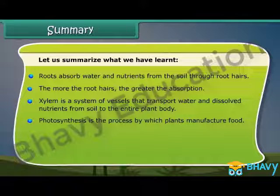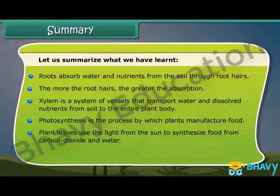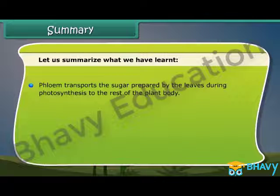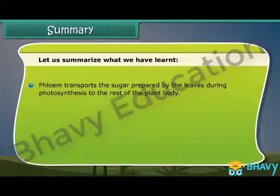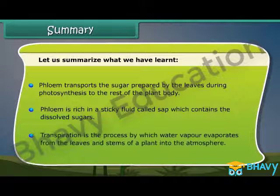Photosynthesis is the process by which plants manufacture food. Plant leaves use the light from the sun to synthesize food from carbon dioxide and water. Sugar and oxygen are the end products of photosynthesis. Phloem transports the sugar prepared by the leaves during photosynthesis to the rest of the plant body. Phloem is rich in a sticky fluid called sap, which contains the dissolved sugars. Transpiration is the process by which water vapor evaporates from the leaves and stems of a plant into the atmosphere.